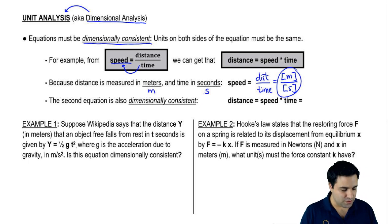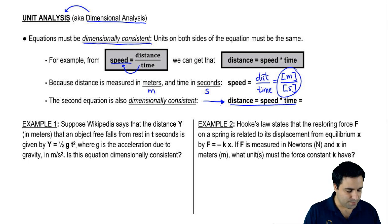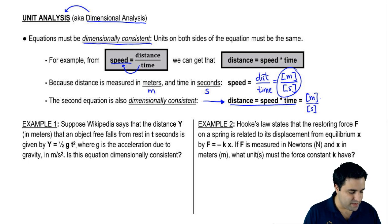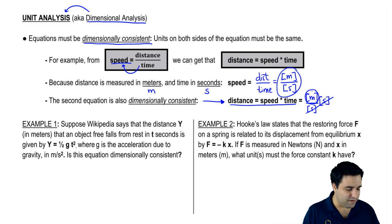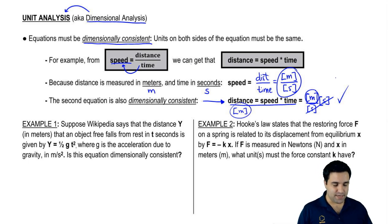So that equation is dimensionally consistent, and so must this variation. Distance equals speed times time. Speed is meters per second, and time is measured in seconds. When you multiply them, the seconds cancel and you're left with meters. So distance is measured in meters — both the left and right sides have the same units, so this equation is dimensionally consistent. That's the idea — it checks out.